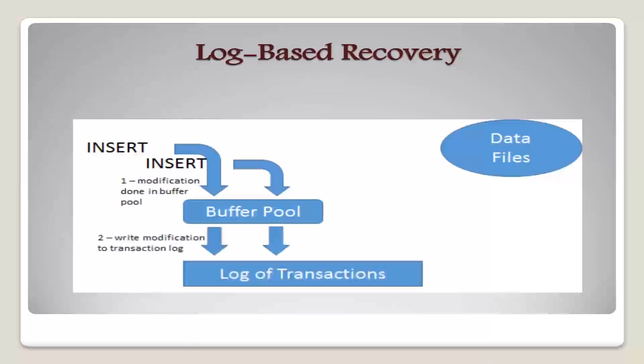V1 is the value of X before the write and V2 is the value to be written to X. The log record notes that Ti has performed the write on data item Xj. Xj had value V1 before the write and will have value V2 after the write. When Ti finishes its last statement, the log record Ti commit is written.